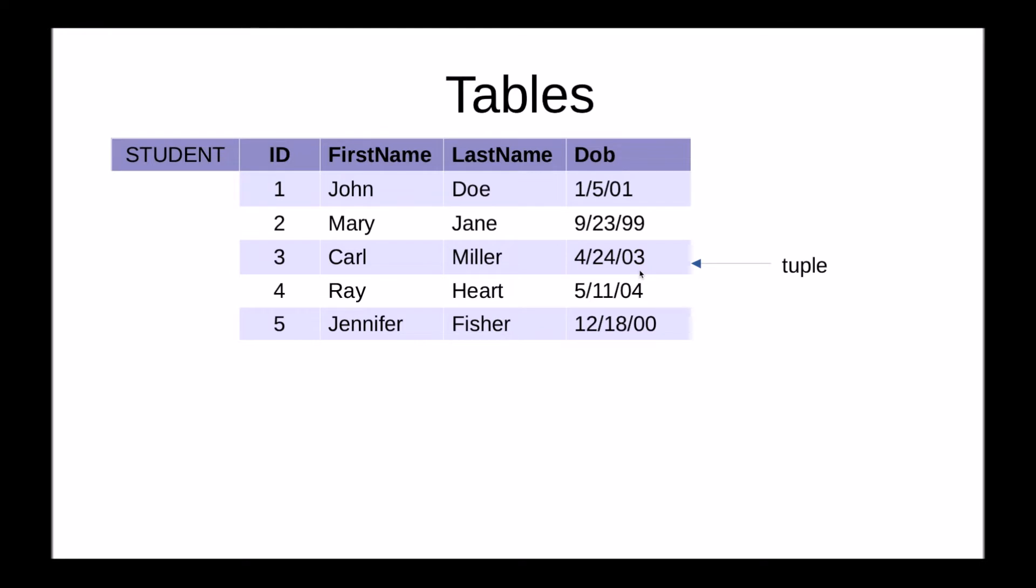Now each tuple in a table has to be unique. There cannot be two tuples that are exactly the same. In order to ensure uniqueness, a primary key is used. The primary key uniquely identifies each tuple in a table.